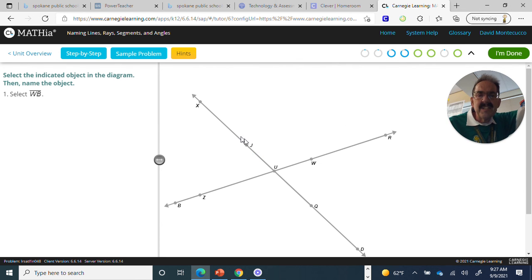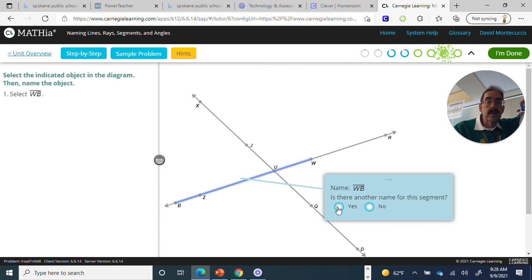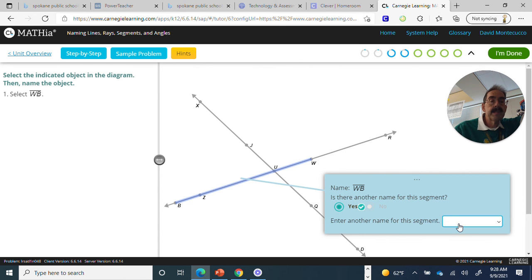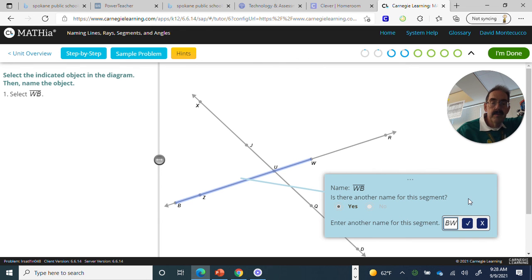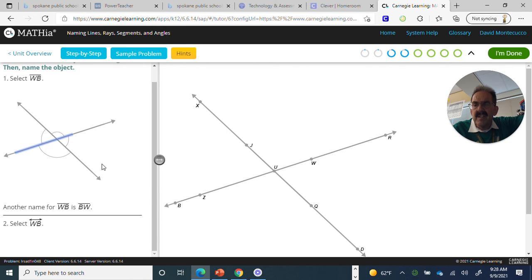So now select WB. Segment WB. There it is. So, again, you can see hovering is a task, depending on the computer and the speed. I got a golden crown. Is there another name for the segment? Yes. BW.